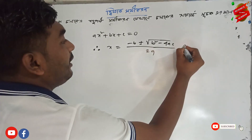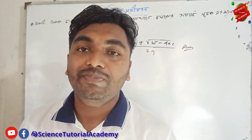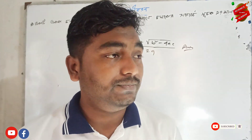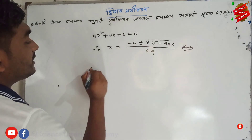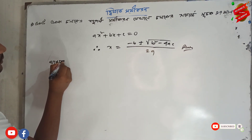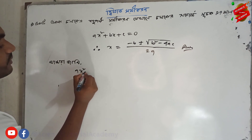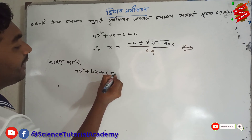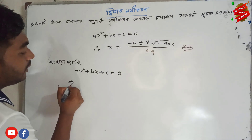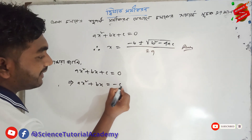We know that this is equal to t. We know that this is equal to 0. We know that this is equal to 1. We know that this is equal to ax squared plus bx plus c. This is equal to minus c.